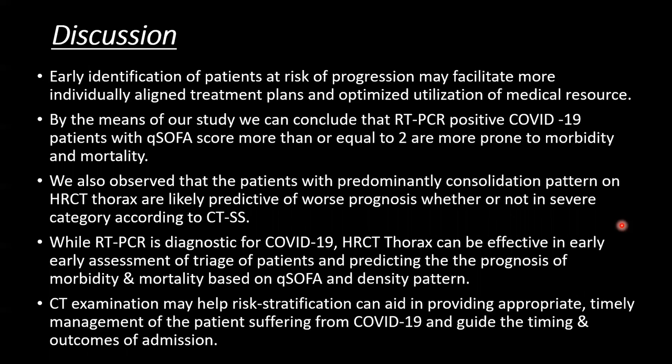Early identification of patients at risk of progression may facilitate individually aligned treatment plans and optimized utilization of medical resources. We concluded that RT-PCR positive COVID-19 patients with a QSOFA score of 2 or more are more prone to morbidity and mortality. We also observed that patients with a predominantly consolidation pattern on HRCT thorax are likely predictive of worse prognosis, regardless of severity category. While RT-PCR is diagnostic for COVID-19, HRCT thorax is still effective in early triage and predicting prognosis based on QSOFA and density pattern.